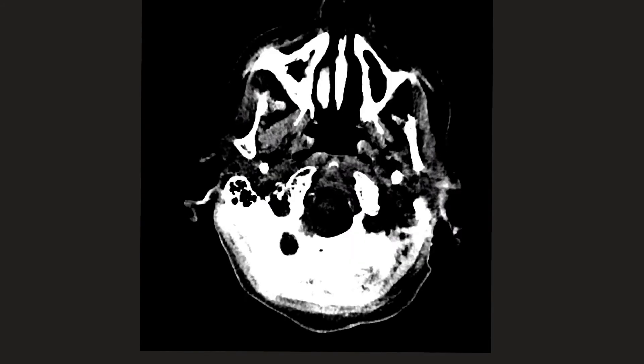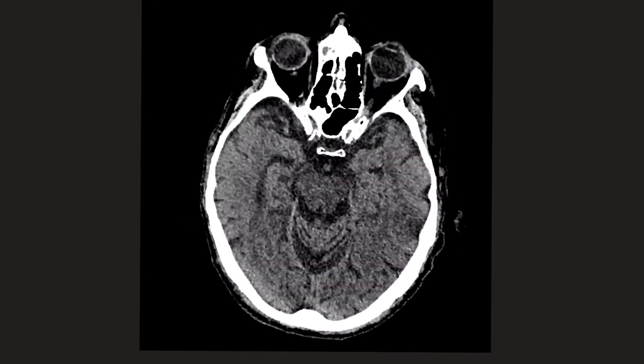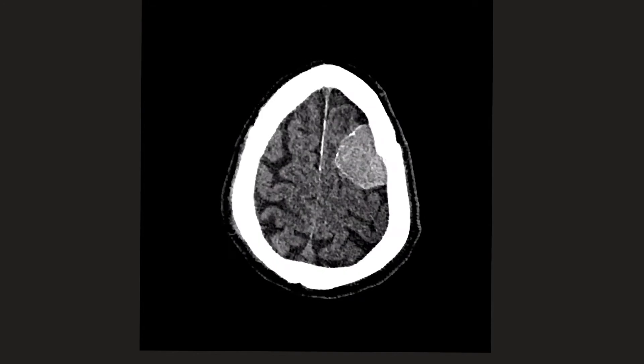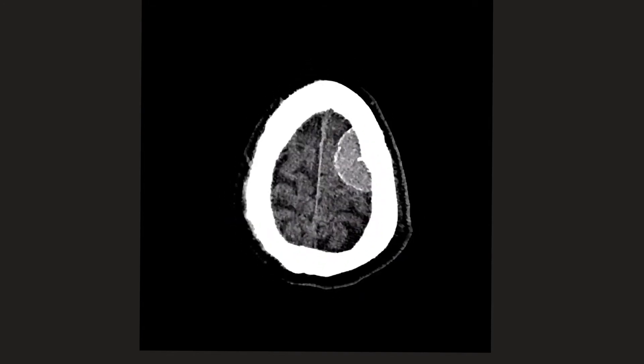Let's take a look at this first case. As we're scrolling through the brain, we can see that there's a large space-occupying lesion in the region of the left frontal lobe. The first thing to say is that it has a rather broad dural base. Secondly, you can see some CSF between the lesion and the brain. Thirdly, better seen on the other slices, you can see that there is preservation of the grey-white matter junction.